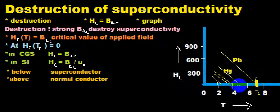At the critical value of temperature, the critical value of the applied magnetic field is zero. In CGS units, HC equals BAC.